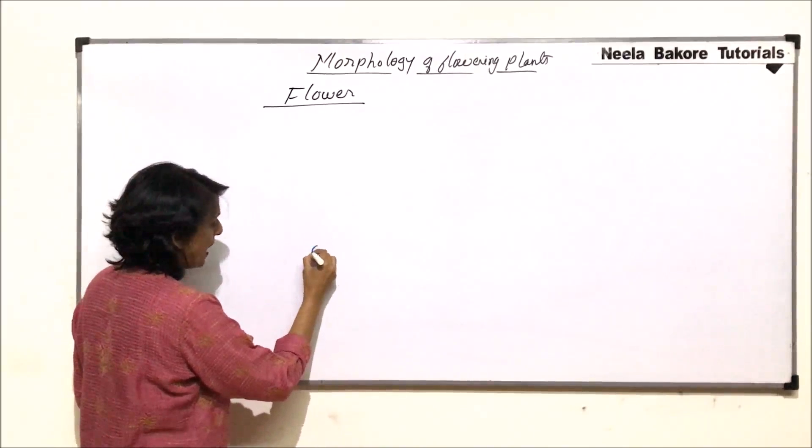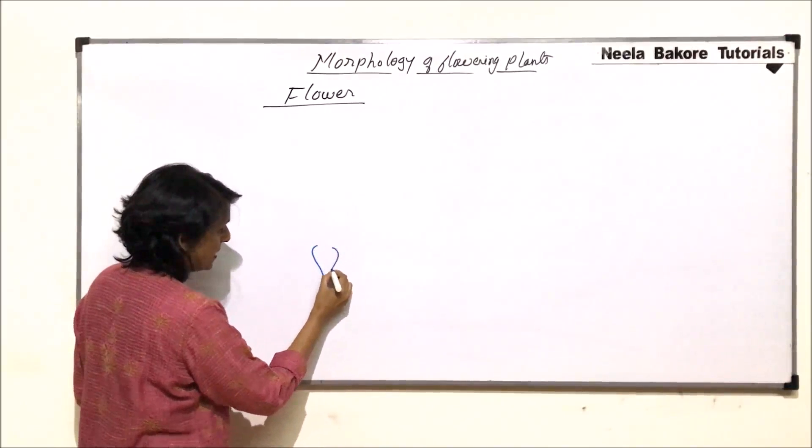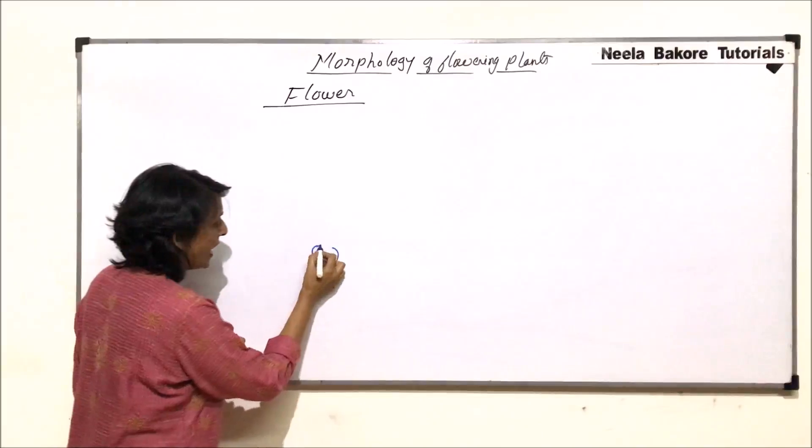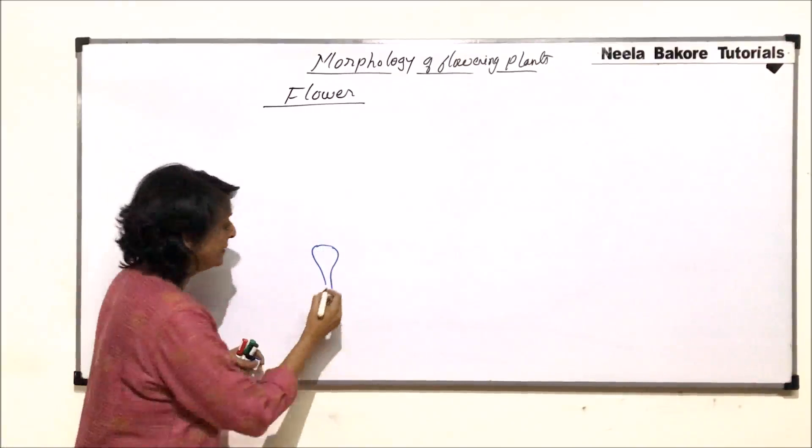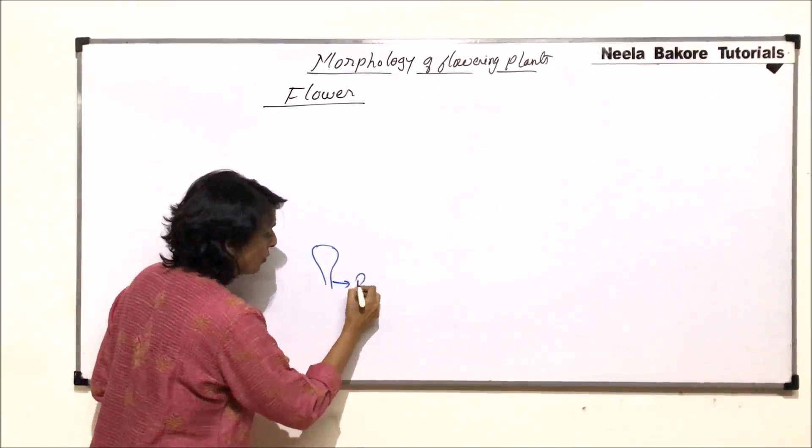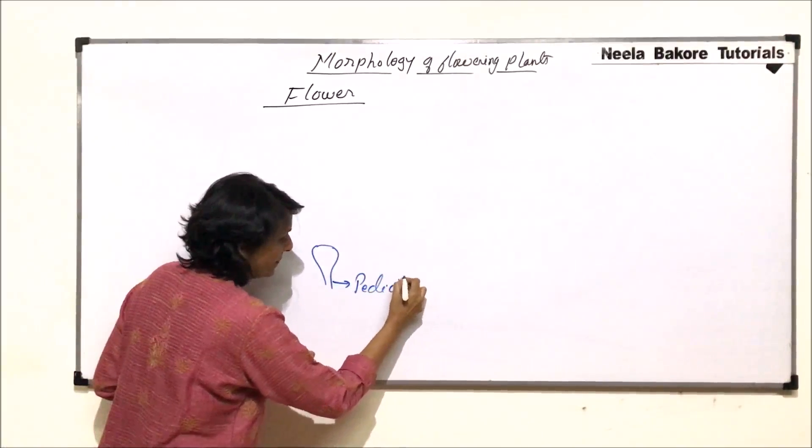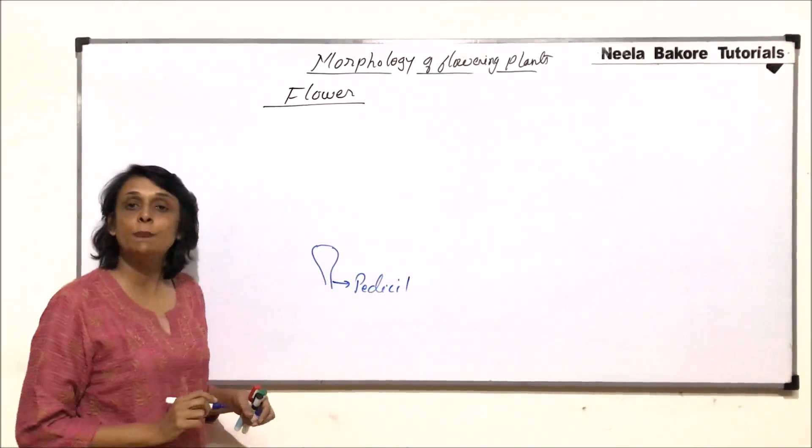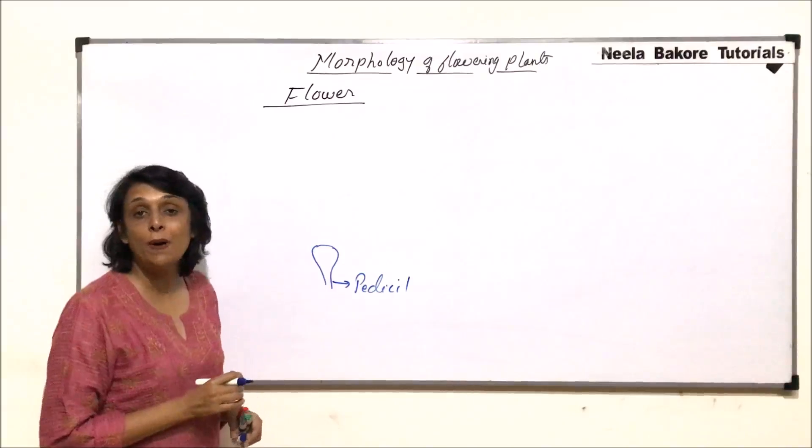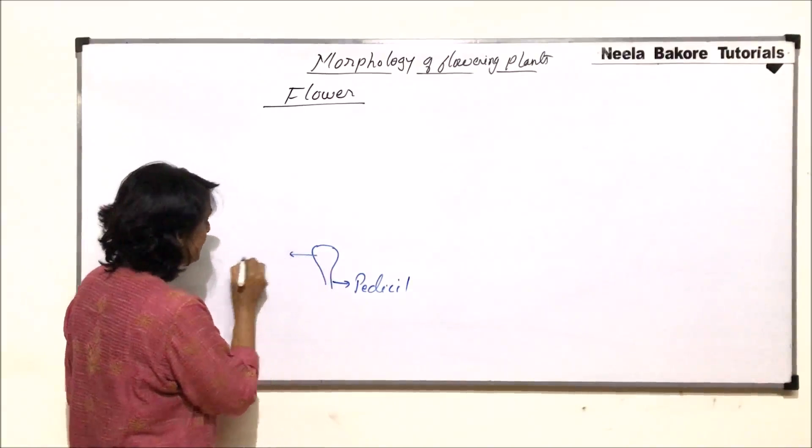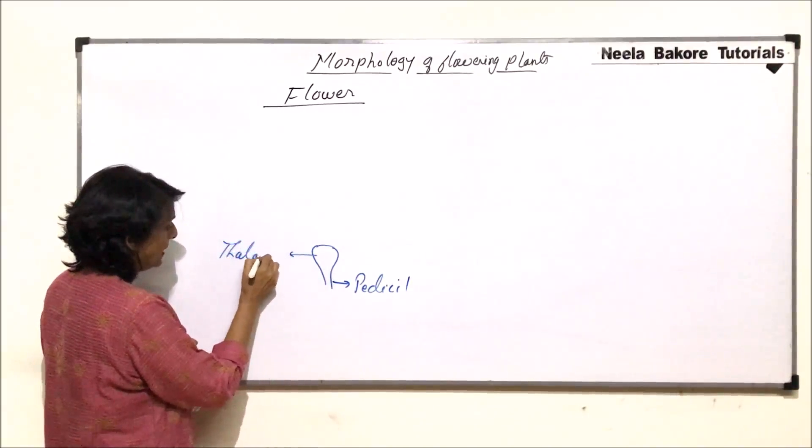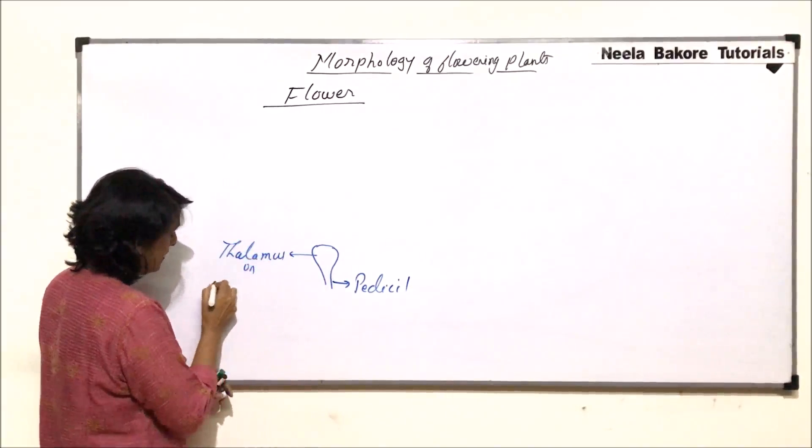When we talk of flower, we see two things: a stalk-like structure and a swollen part. The stalk of the flower is known as pedicel and the swollen part on which the floral parts are raised, this is known as the thalamus or receptacle.